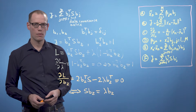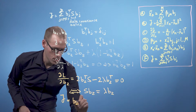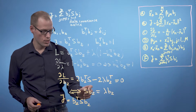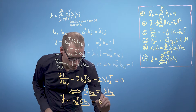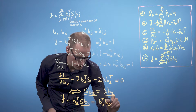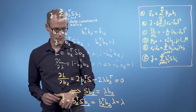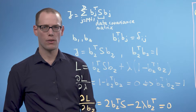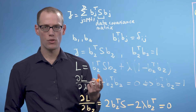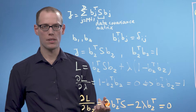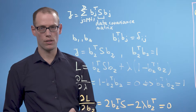b2 is an eigenvector of the data covariance matrix and the Lagrange multiplier plays the role of the corresponding eigenvalue. Going back to the loss function, we had j equals b2 transpose times s times b2. Since s times b2 equals lambda times b2, this becomes b2 transpose times b2 times lambda, and because we have an orthonormal basis, we end up with lambda as our loss function. Therefore, the average squared reconstruction error is minimized if lambda is the smallest eigenvalue of the data covariance matrix. b2 is then the corresponding eigenvector, spanning the subspace we will ignore, and b1 — spanning the principal subspace — is the eigenvector belonging to the largest eigenvalue.